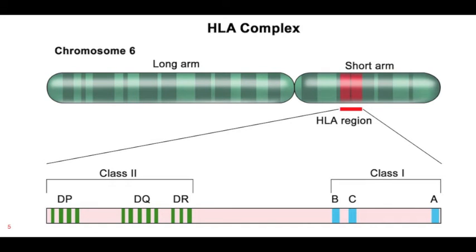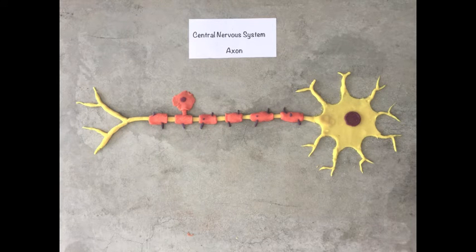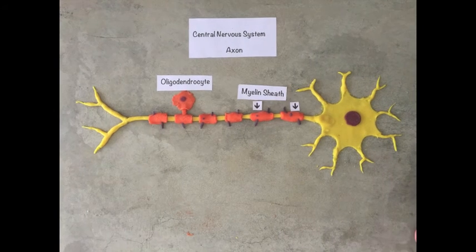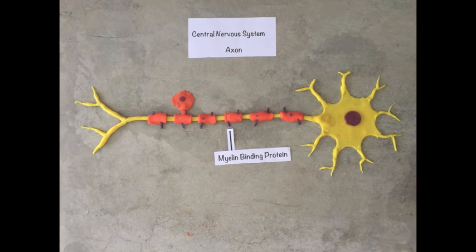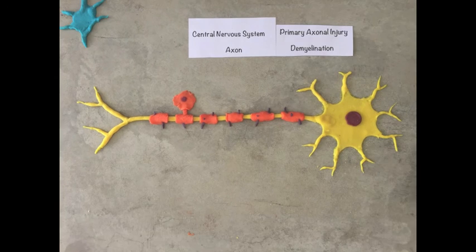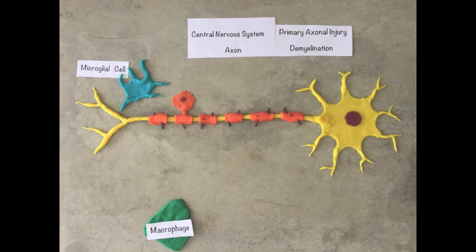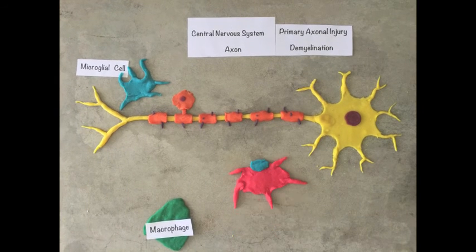The HLA-DRB1*1501 segment on the short arm of chromosome 6 has demonstrated to be significantly involved in benign and malignant MS patients. The dysfunction of the immune system caused by the HLA-DRB1 polymorphism is what causes the autoreactive response seen in MS sufferers. The axons of the CNS are highly insulated by oligodendrocytes which produce the myelin sheath wrapping the CNS axons, improving saltatory conduction of the neural impulses. Microglia, the resident phagocyte of the CNS, and macrophages patrol for antigens along with antigen-presenting cells.